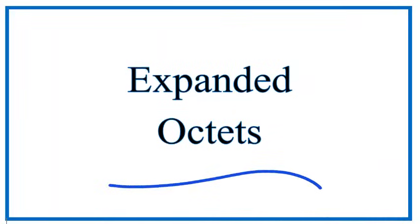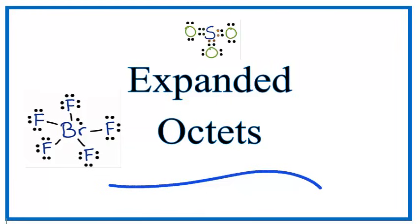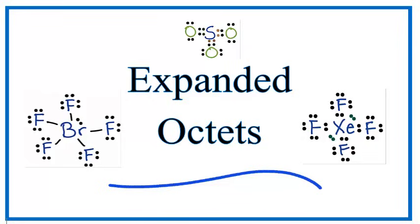We also have what are called expanded octets. These exceptions to the octet rule get a bit complicated, but essentially some of the electrons can hybridize and fill d orbitals. This is possible for elements in the third period, past silicon and below.